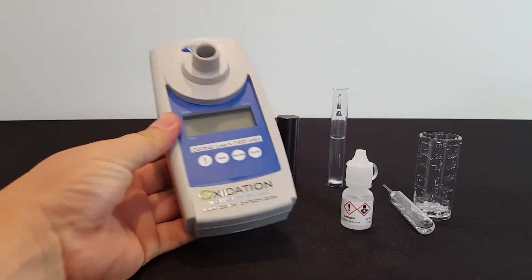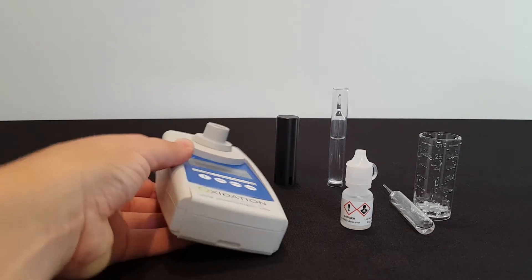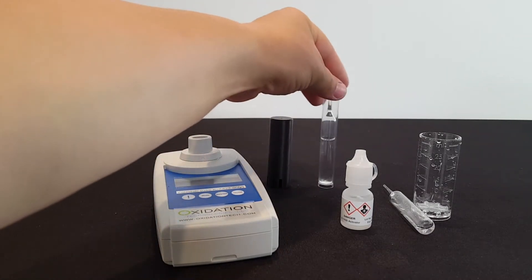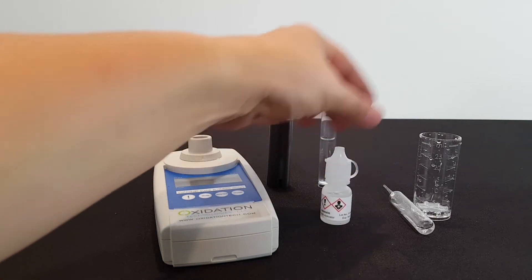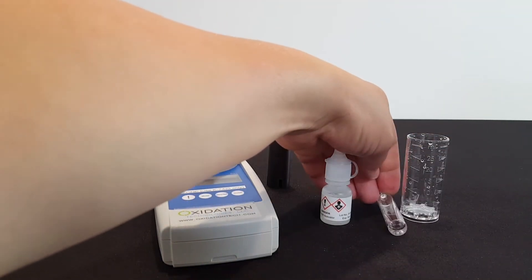For the test, we need the I-2019 dissolved ozone meter, the light shield, the zeroing ampoule, the activator solution, the 25 milliliter test cup, and the test ampoule.